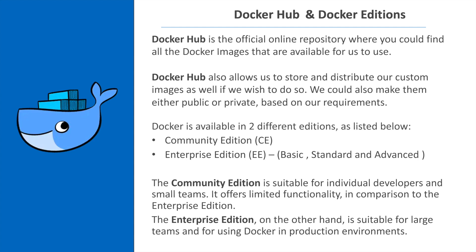Docker Hub is the official online repository where you can find all the Docker images available to use. Docker Hub also allows you to distribute your custom images. Docker is available in two editions: Community Edition, which is suitable for individual developers and small teams and offers limited functionality, and Enterprise Edition, which is suitable for large teams and production environments.